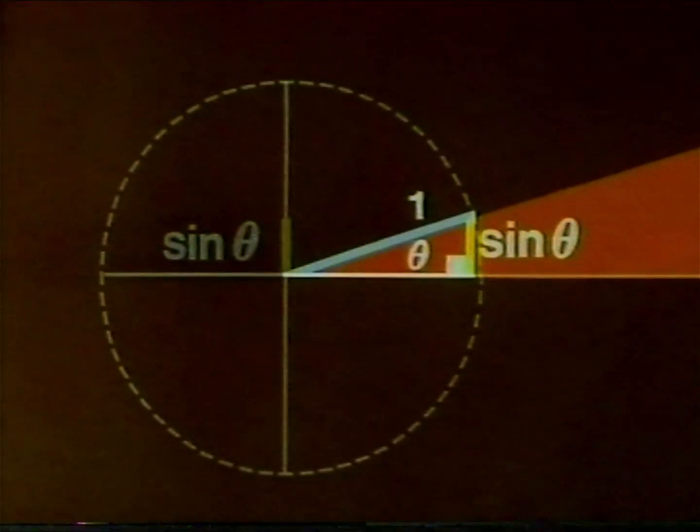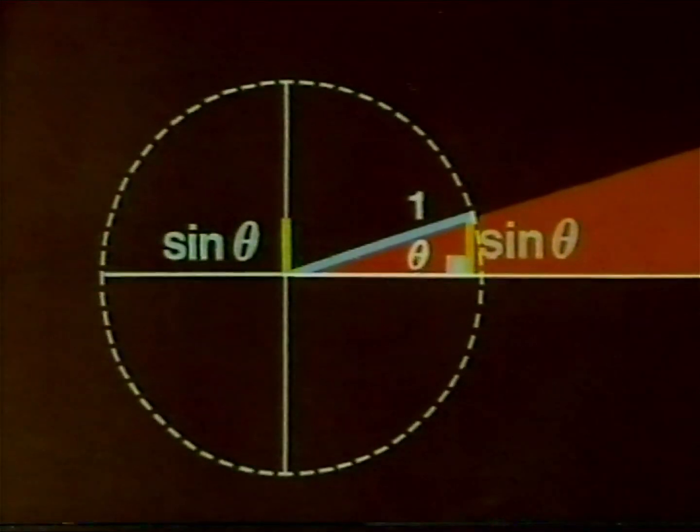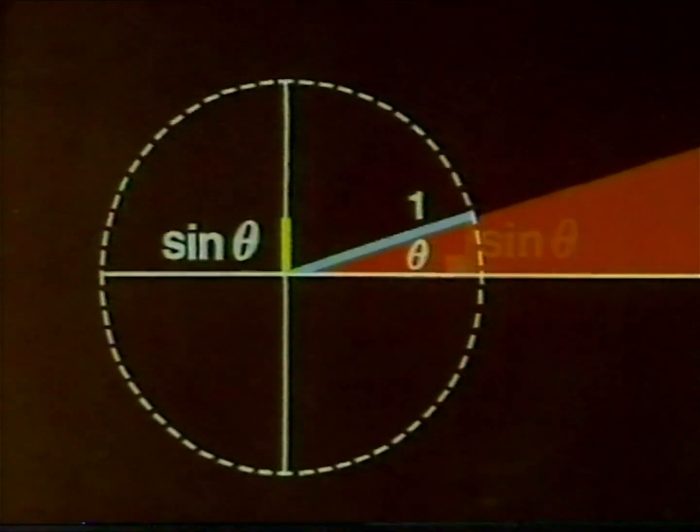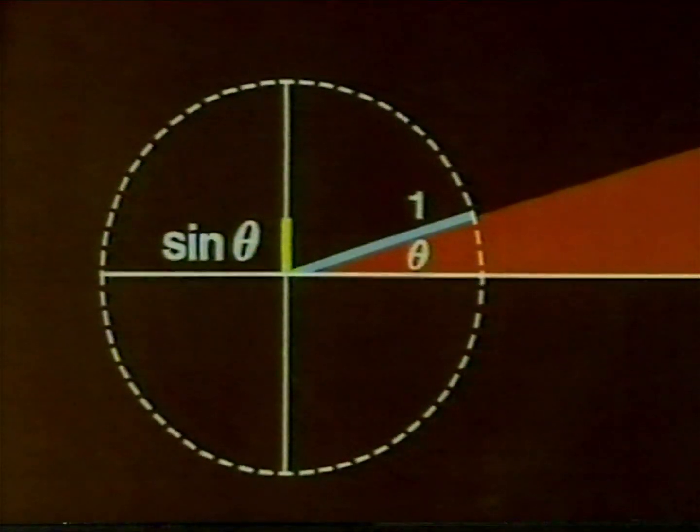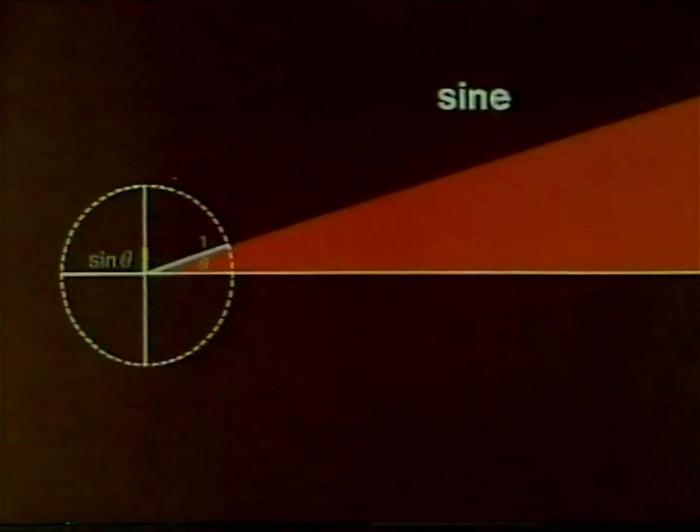When the length of the hypotenuse is one, the side opposite the angle, or the sideways displacement from the initial line, is the sine of the angle. Let's collect some sine lengths.